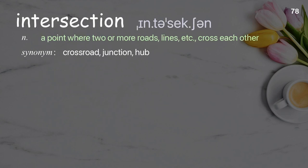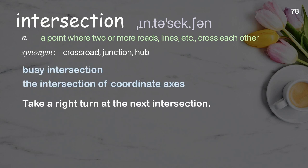Intersection. A point where two or more roads, lines, etc., cross each other. Examples: busy intersection; the intersection of coordinate axes. Take a right turn at the next intersection.